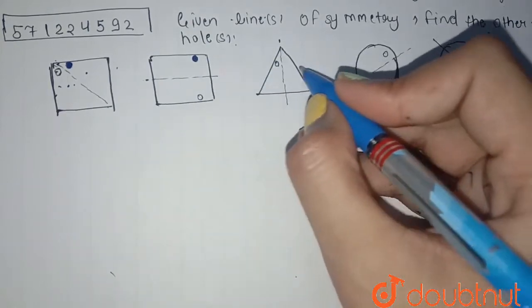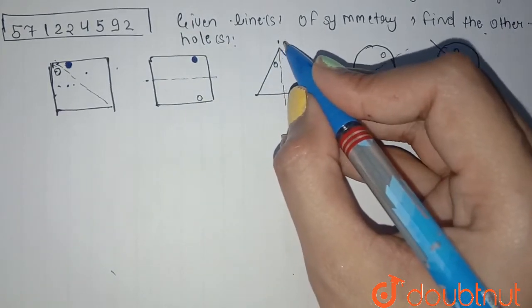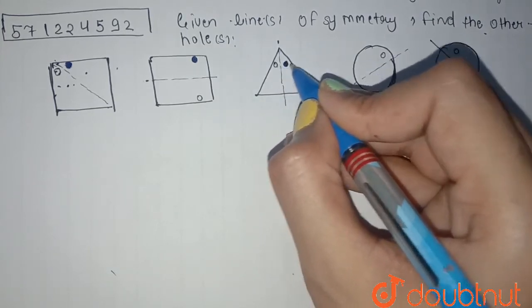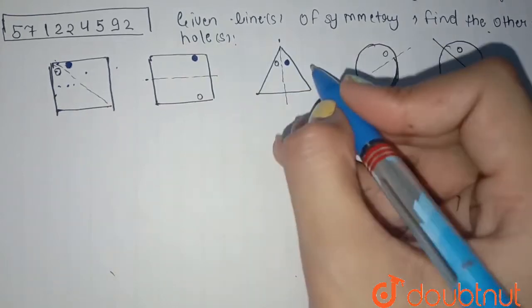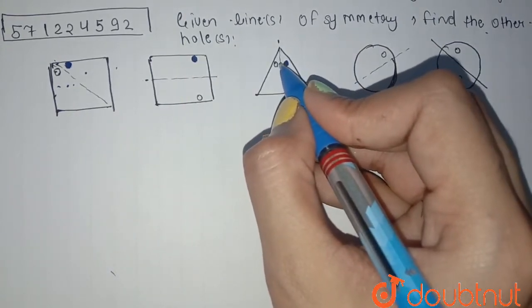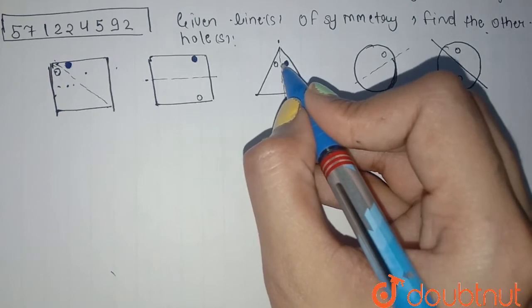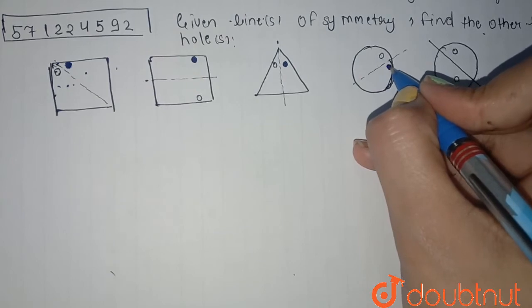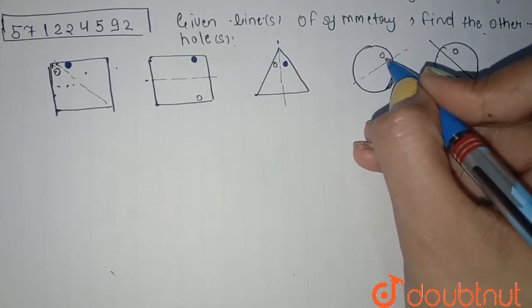here. So the distance will depend upon how much distance it is from the line. At the same distance, this hole will be. So here also the same thing will happen. The distance will depend upon how much distance this is. At the same distance,